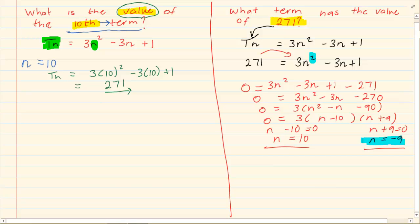Now n is equal to minus 9. If you are standing in a row and you are counting people you go 1, 2, 3. They are all natural numbers. You can't have a negative for a term number. Therefore this answer will not be applicable. So the only answer that is valid is that n is equal to 10.